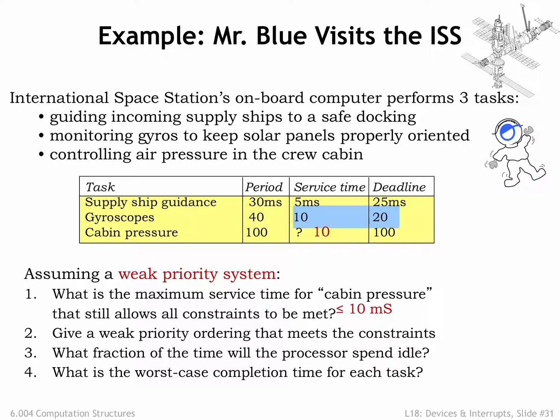Question 2: give a weak priority ordering that meets the constraints. Using the earliest deadline strategy discussed earlier, their priority would be G with the highest priority, SSG with the middle priority, and CP with the lowest priority.